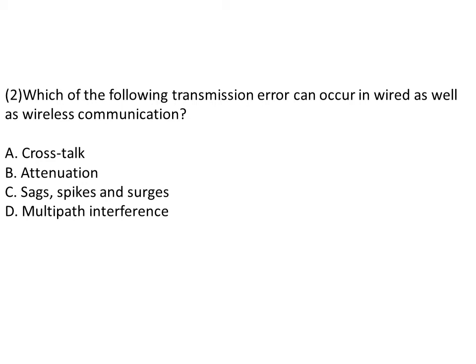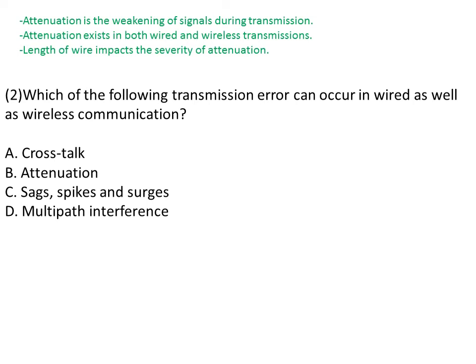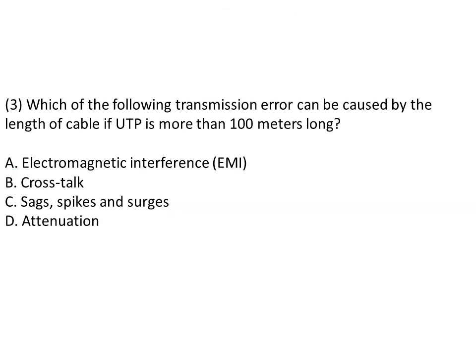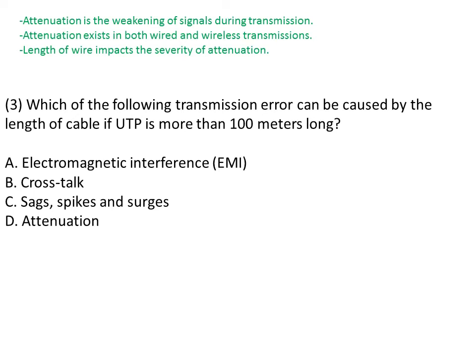Which of the following transmission errors can occur in both wired and wireless communication? The meaning of attenuation is weakening of signal; higher the length, chances of attenuation increase, and it exists in both wired and wireless transmission — so the answer is attenuation. Which transmission error is caused by cable length? If UTP is more than 100 meters long, the answer is again attenuation, as it is impacted by length of wire.